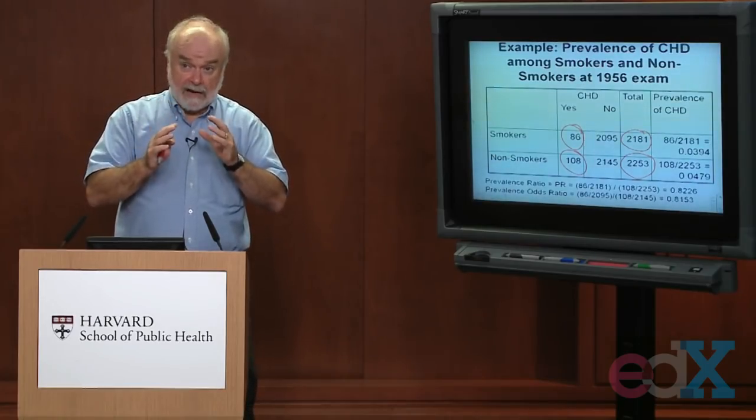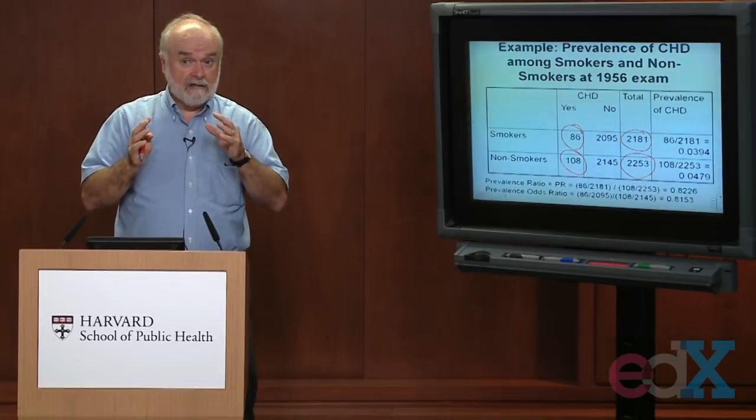Compared to 108 of the 2,253 non-smokers. This is what we mean by cross-sectional data — data collected at one point in time. The point in time here is the 1956 exam, classifying people in two dimensions: whether they're smokers or non-smokers (the row variable), and whether they did or did not have coronary heart disease at that time (the column variable). Again, this is prevalence data, not incidence data.